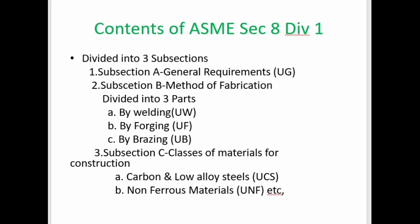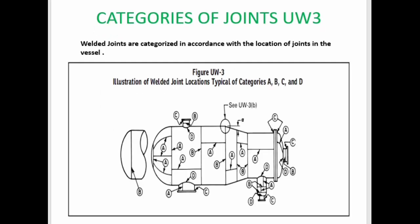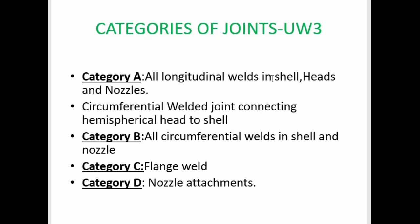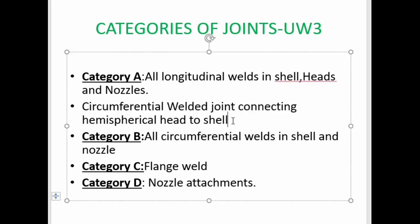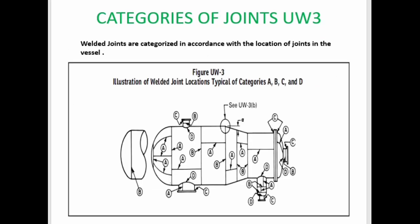Option B is non-ferrous materials, denoted as UNF. Categories of weld joints are given in UW-3 of ASME Section 8 Division 1. Weld joints are categorized in accordance with the location of joints in the vessel. They are classified into Category A, Category B, Category C, and Category D welds. Category A welds are longitudinal welds in shell, heads, and nozzles, and also the circumferential weld joints connecting hemispherical heads to shell. Category B welds are circumferential welds in shell and nozzle. Category C is flange and flange attachment, whereas Category D is nozzle attachment.